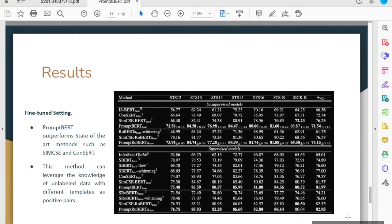In the supervised models also, PromptBERT again outperforms the rest of the sentence embedding and sentence encoder models. We can also learn that the PromptBERT method can leverage unlabeled data and still outperform the other models.